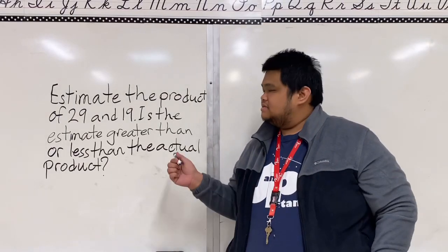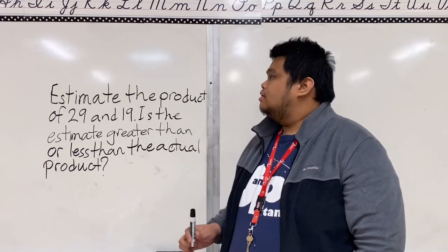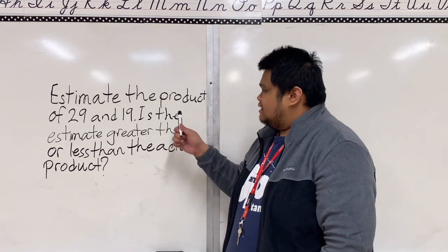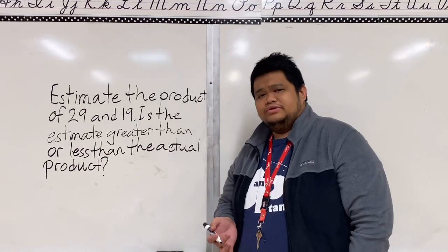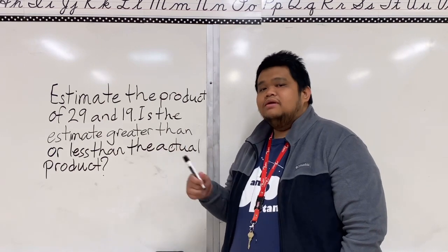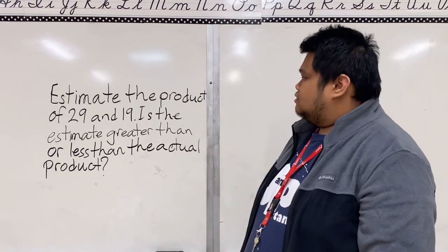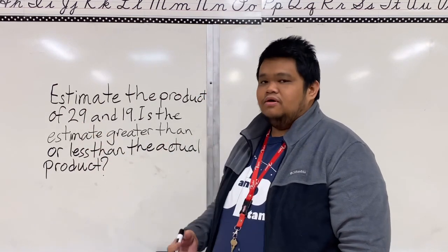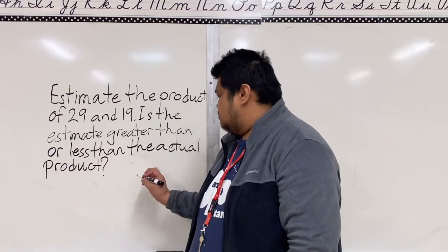All right, let's proceed now. Class, let's proceed with question one, example number one from your book. Let me read it for you. Estimate the product of 29 and 19. Is the estimate greater than or less than the actual product? It's not just a matter of yes or no, we really need to identify the compatible numbers for this question and estimate it. First, what you're gonna do is convert this number, round it off to the nearest tens. So what is the nearest tens of 29? Yes, you got it right, it's 30.